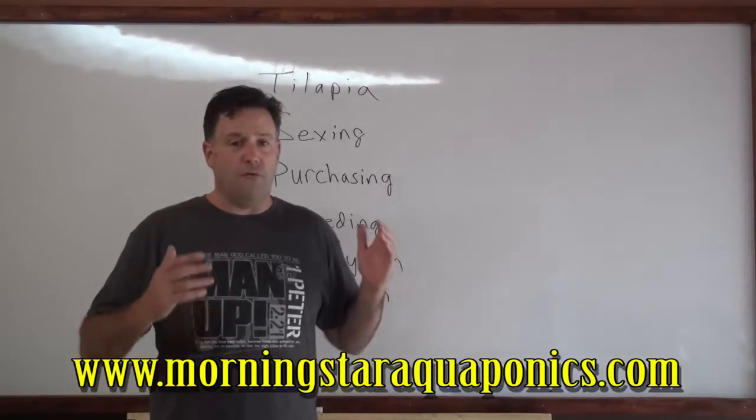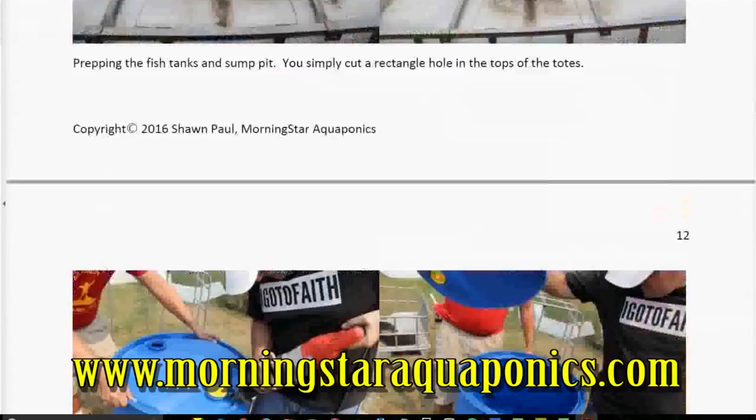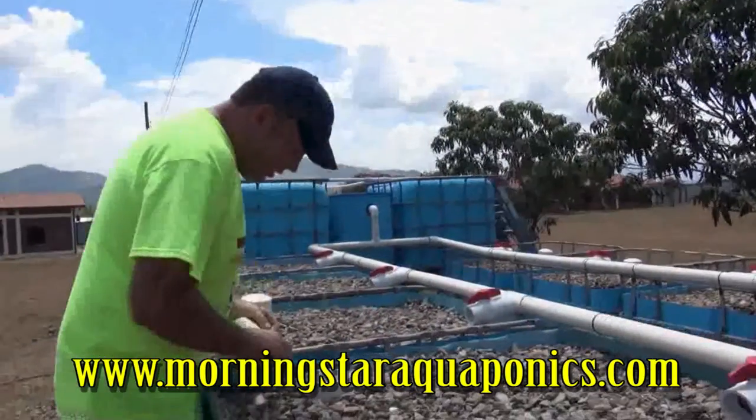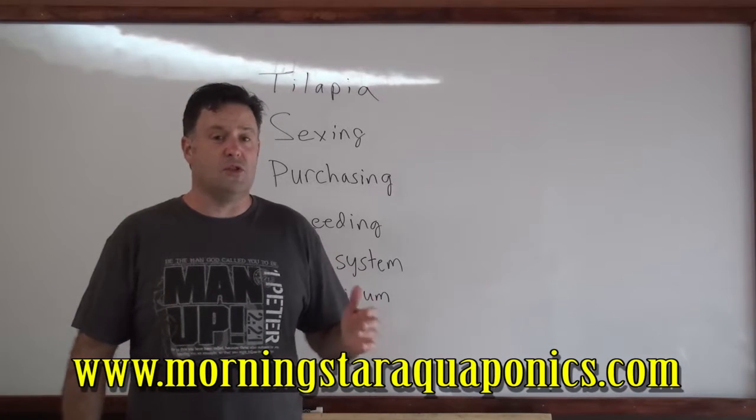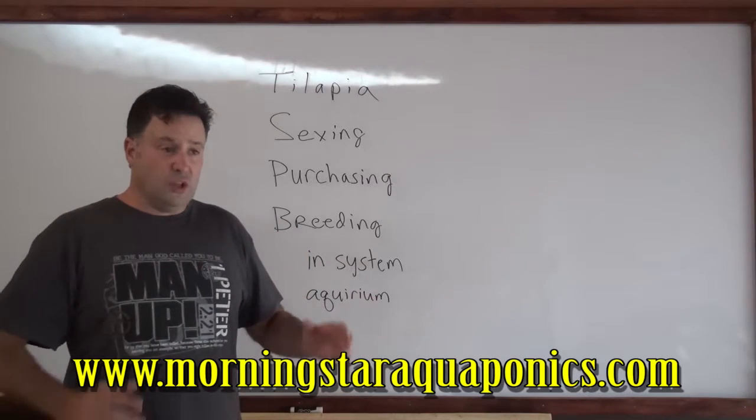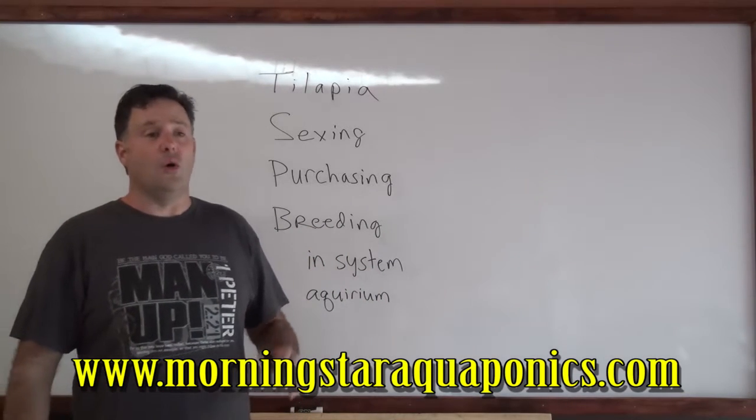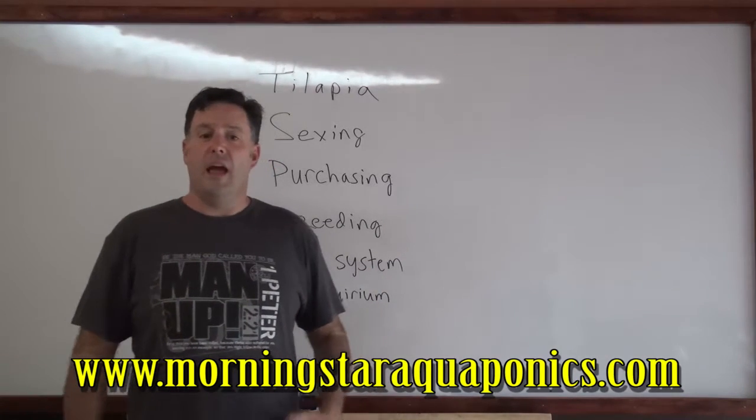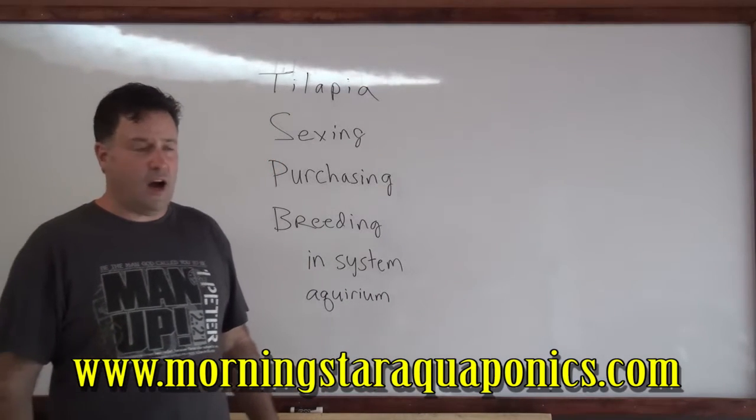And that's what we do. We wrote a 43-page e-book that you can download, and we have a 45-minute complimentary video that goes along with that. Within the e-book, we have diagrams, drawings, materials list, tool list. So literally, you could start building your system today. Just check out our website and you'll see all the information there. Again, it's MorningstarAquaponics.com.